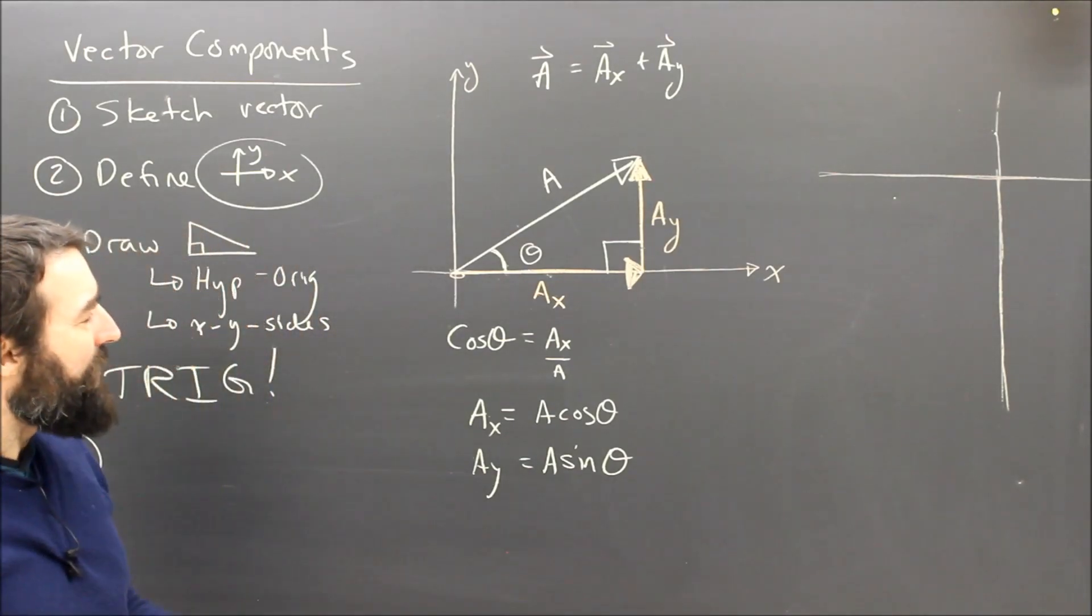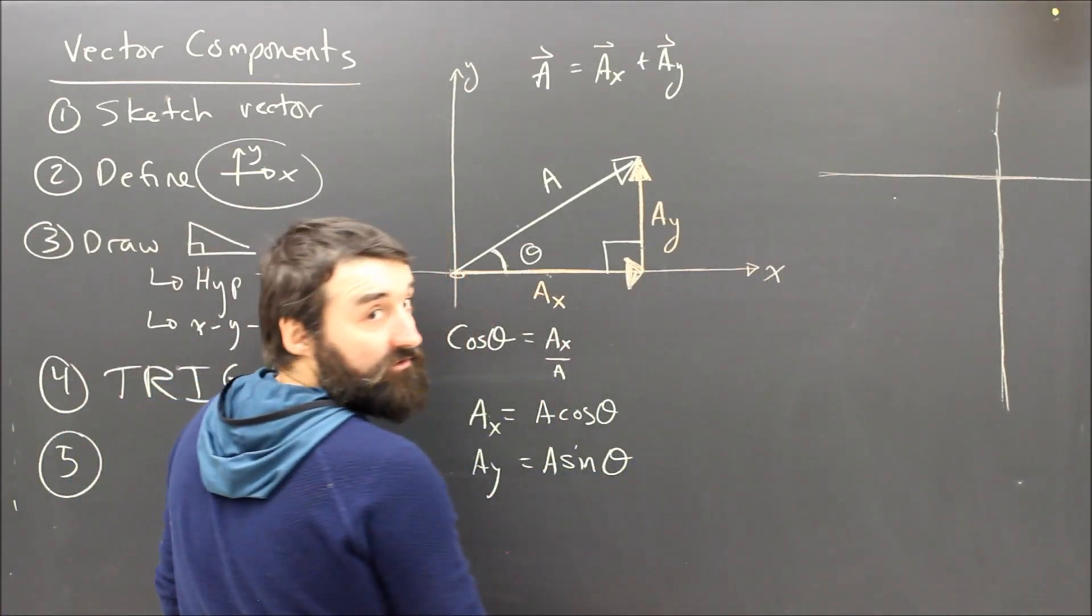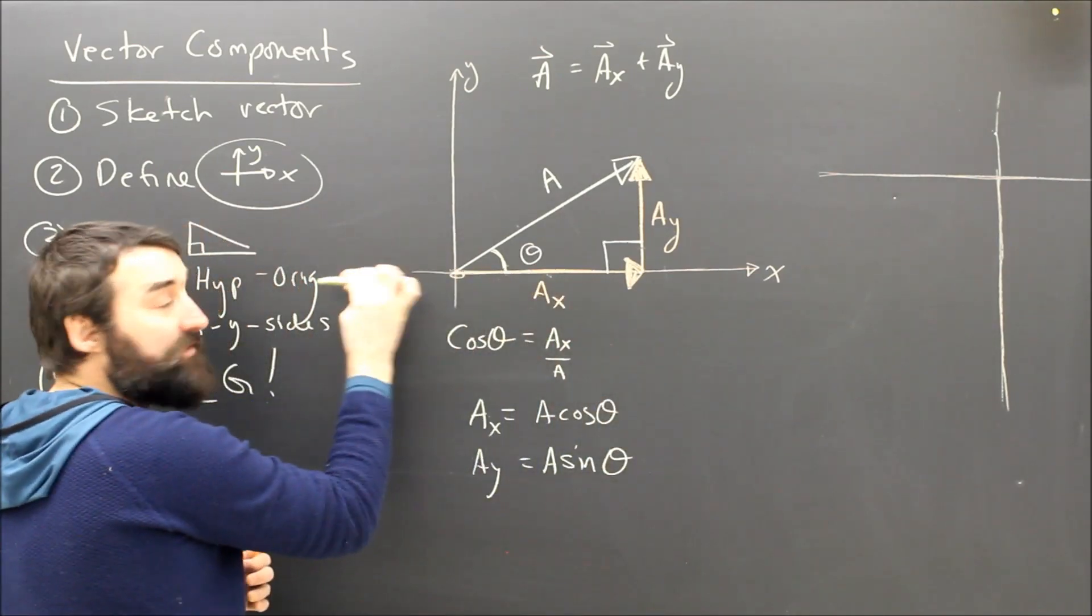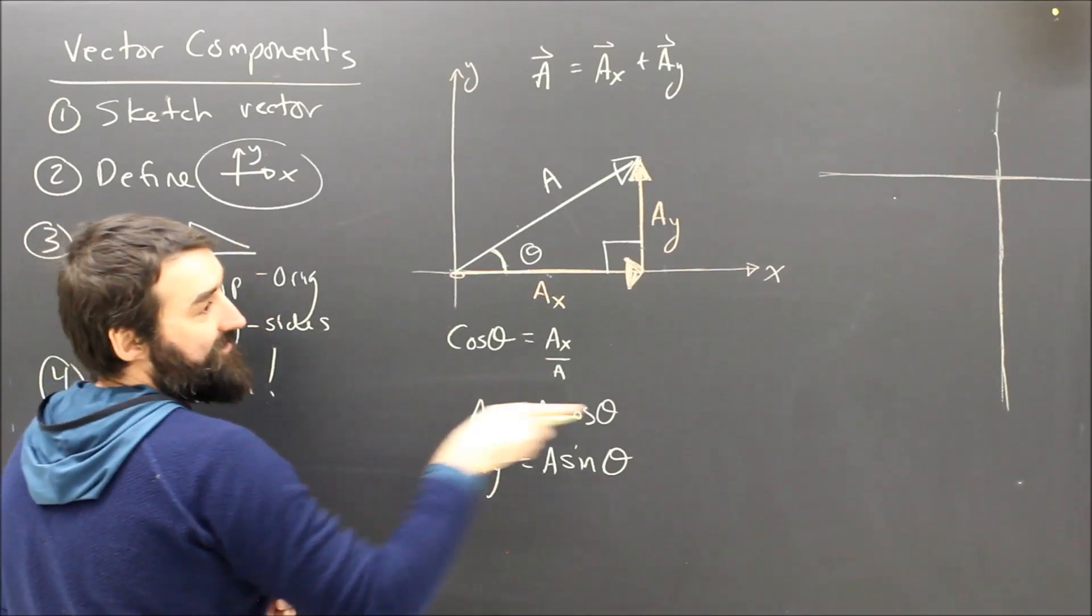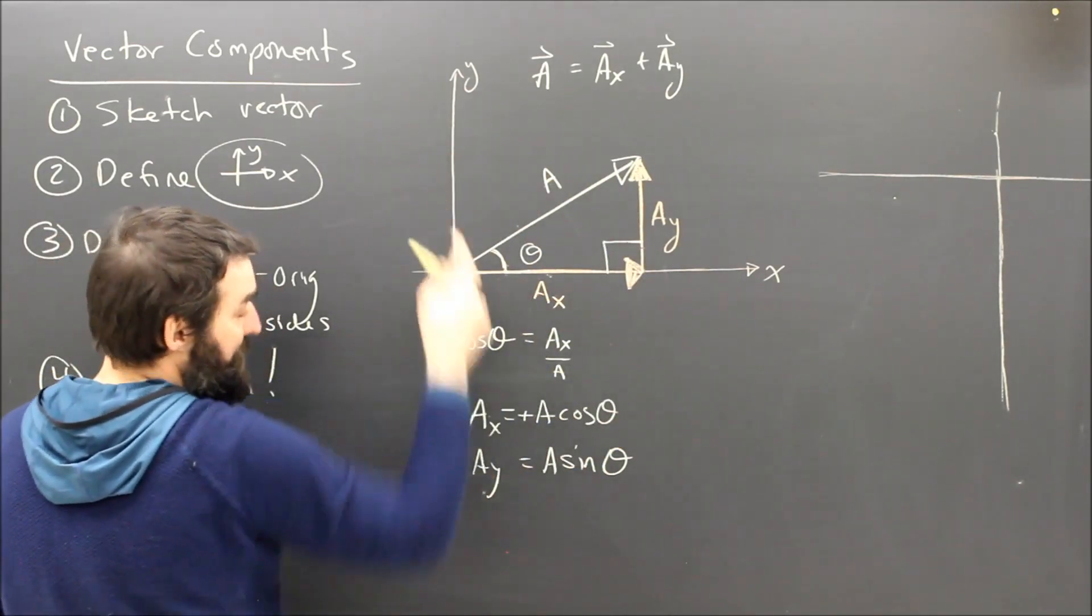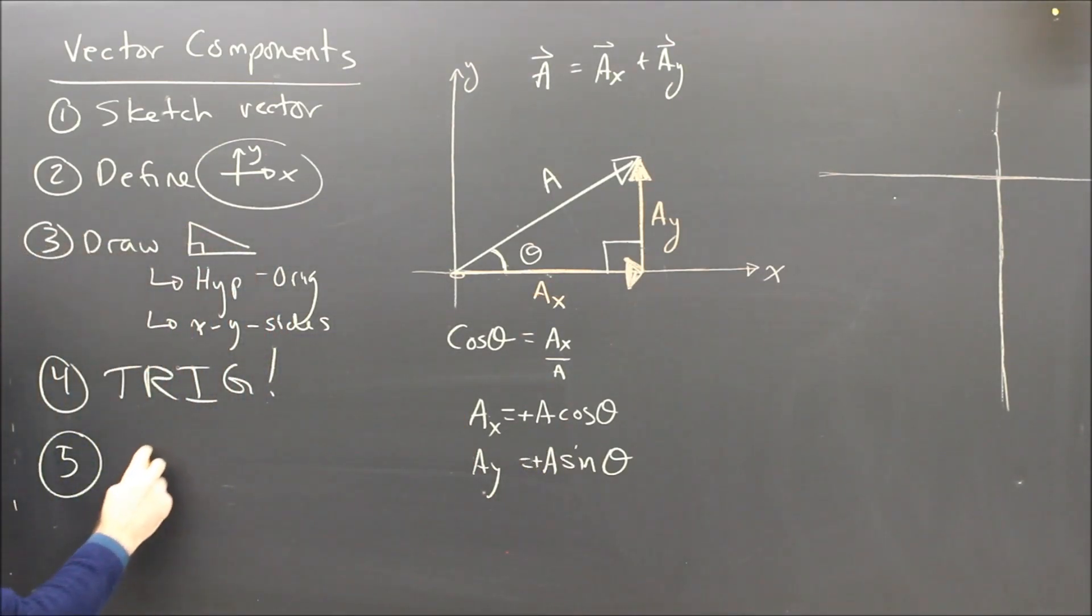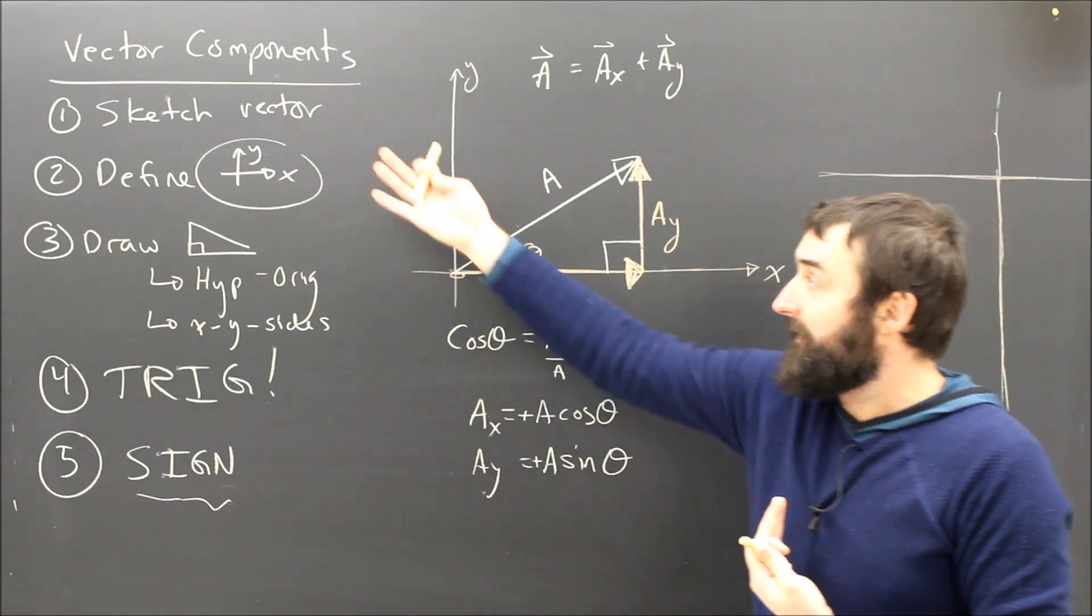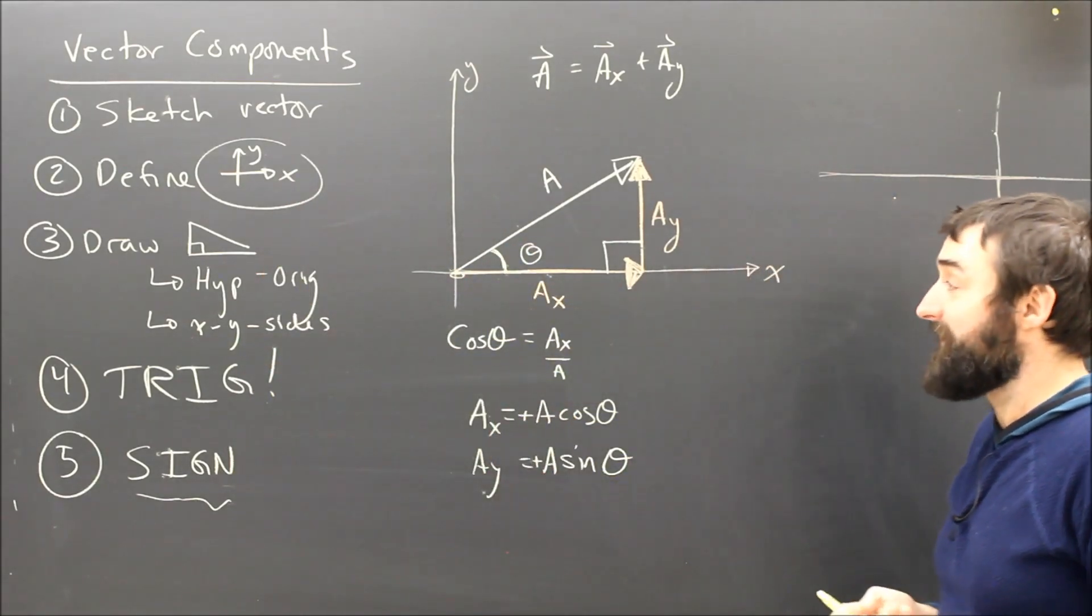Now I'm pretty much done, but there's one thing that I haven't really been careful about. I said to the right was the x direction, which means to the left is the negative x direction. My answer here is positive because it's in the positive x direction. Similarly here, Ay is up. Up is what I call positive y. So technically, these are both positive. That's pretty easy to get, but when they're negative, people mess them up. So the fifth little step that I like to say is I've got to double check my sign. Did I get it right? The plus or the minus.